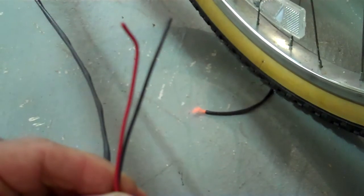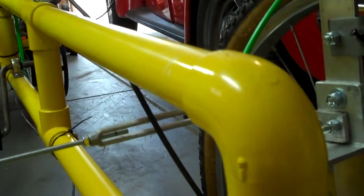I'm using 22 gauge speaker wire here. Now, since normally these headlights ground out to either the metal or the aluminum frame of the bike, I don't have that here because I've got a PVC frame.